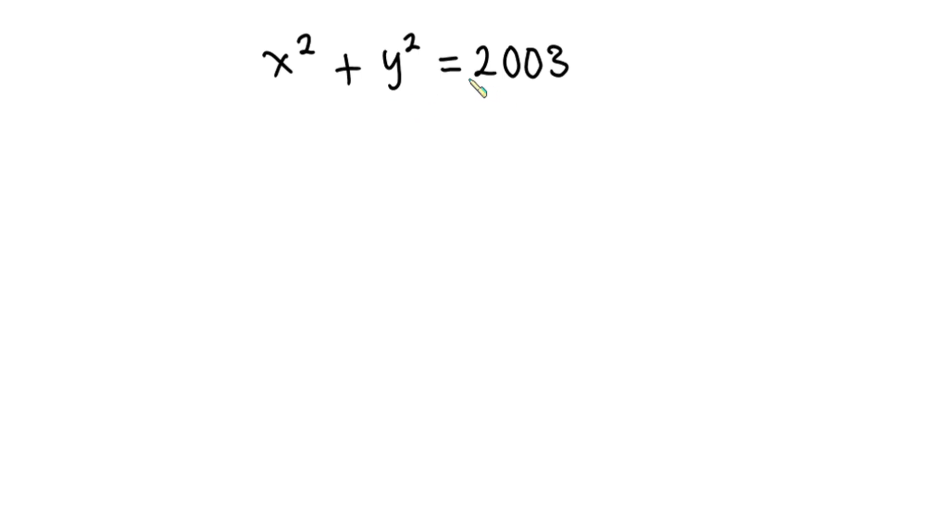First, let's consider the right hand side of the equation. We have 2003, which is an odd number. And one important thing you should note is that if you have even number plus another even number, you'll be getting even number. And again, if you have odd number plus another odd number, you'll still be getting even.